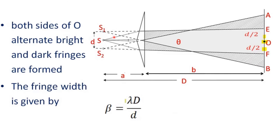In the Fresnel's biprism arrangement, a monochromatic source of light S passes through a narrow slit, through the biprism, and the refracted images are focused onto a screen placed behind the prism. The interference pattern is observed there; an eyepiece can be placed to observe the pattern. The central bright fringe occurs at O. Importantly, S1 and S2 are coherent sources since they originate from the same monochromatic source passing through a narrow slit.